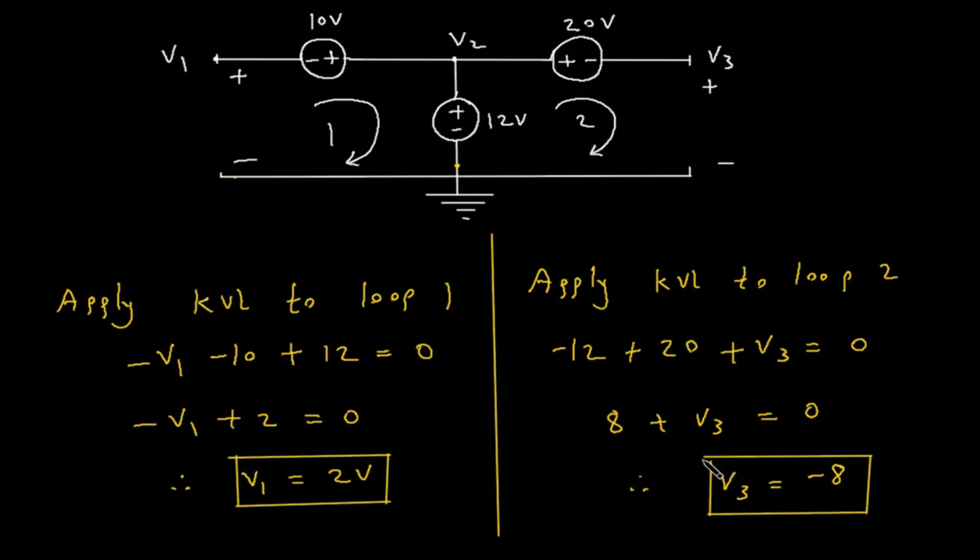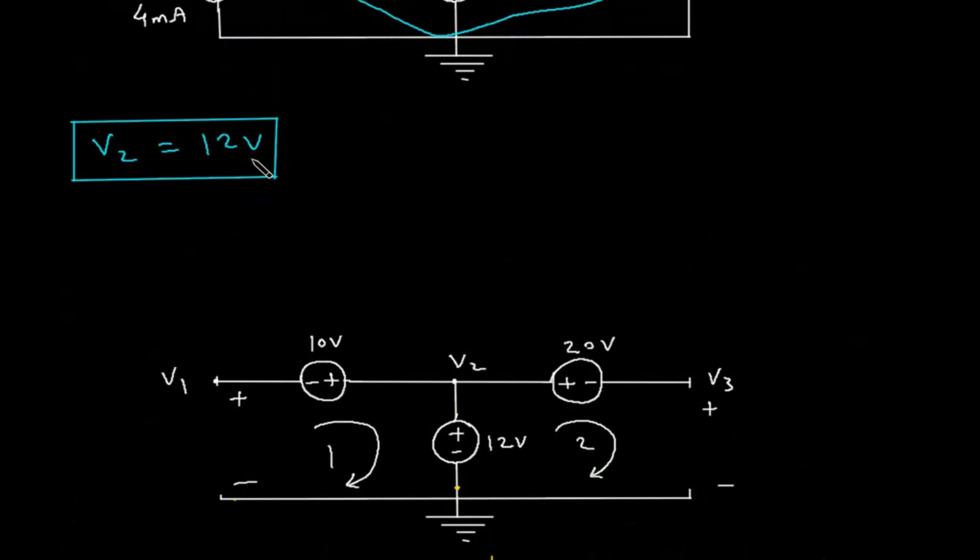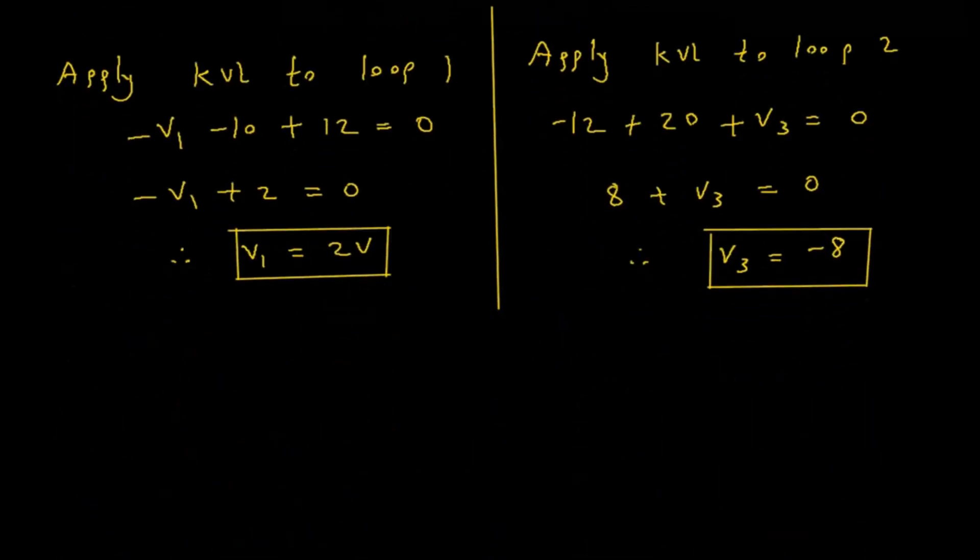So, V1 is equal to 2V, V2 is equal to 12V, and V3 is equal to minus 8V.